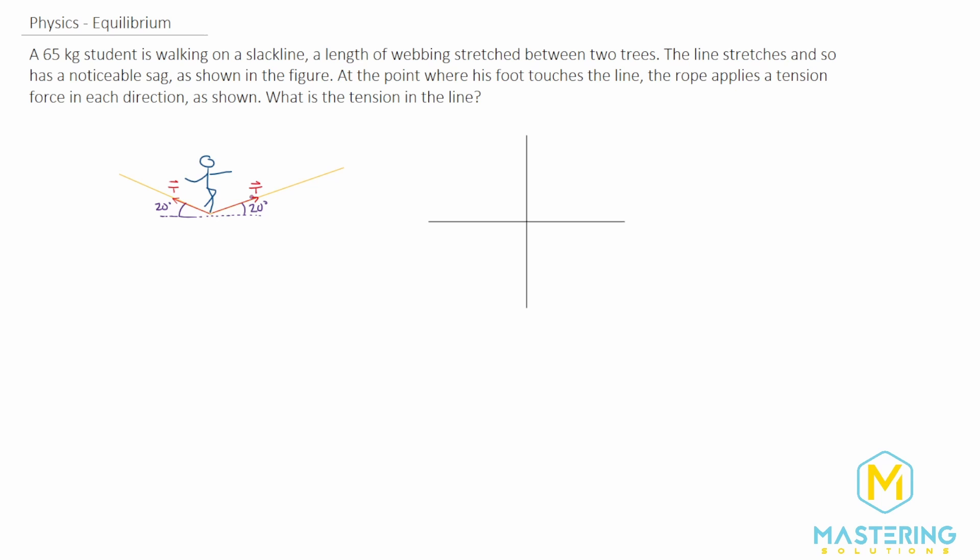the rope has a tension in each direction. We denote this with vector T both ways, and we need to figure out what the tension is.